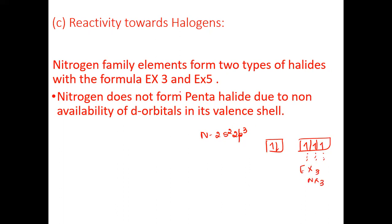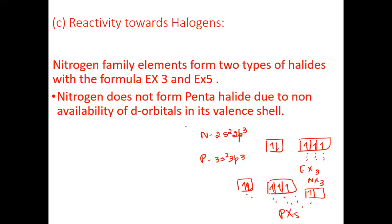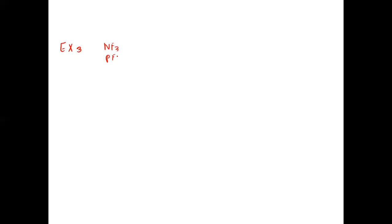Nitrogen family elements exist in two forms: trihalide and pentahalide. Nitrogen does not form pentahalide due to the absence of d-orbitals. The trihalides are of MX3 type — all fluorides exist: NF3, PF3, arsenic trifluoride, antimony trifluoride, and bismuth trifluoride.